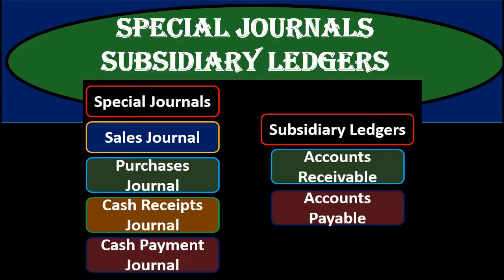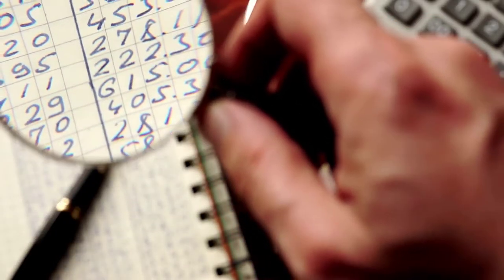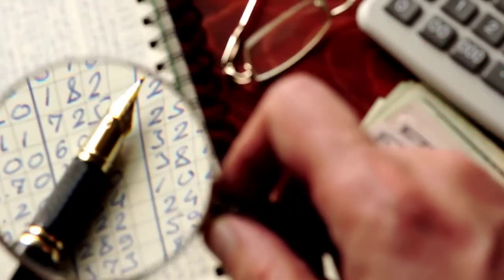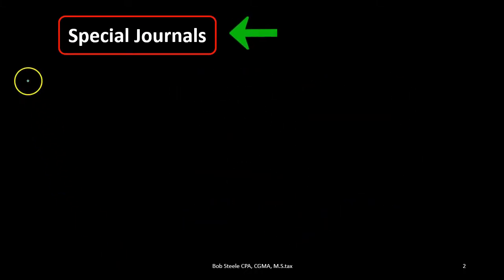In this presentation we're going to talk about special journals and subsidiary ledgers. First we're going to list out the special journals and talk about when we would use them, why we would use them, and how they fit into the accounting system. Special journals are basically going to group types of transactions. We typically see transactions in order of when they happen, recorded by date as they occur. But if we are able to group those transactions into special journals, that can simplify the process.